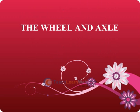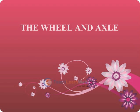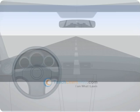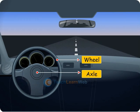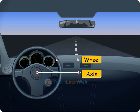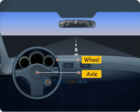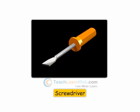The wheel and axle consists of two cylinders of different diameters joined together such that if one is made to rotate, the other also rotates. Examples include the steering wheel of a car and a screwdriver.